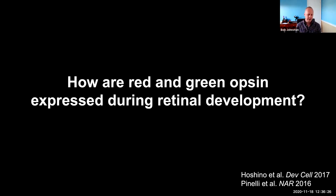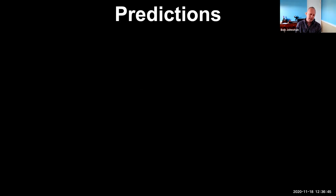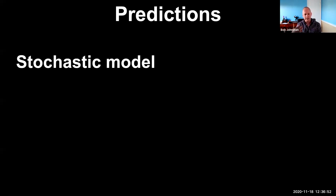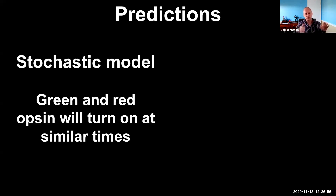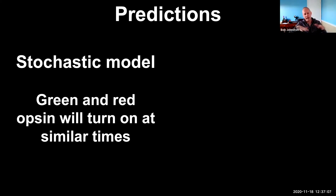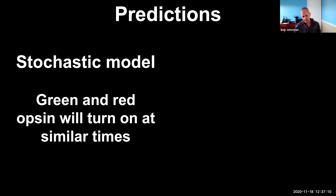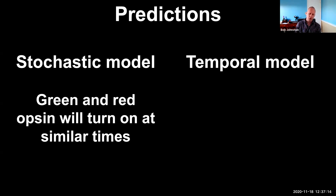Other data from other groups, though more sparse, suggested a different model: blue cones come first, followed by green cones, then red cones. When we entered this game, Sarah ultimately came back to one big question: how are red and green opsin expressed during retinal development? We were fortunate that datasets published by Hoshina et al. and Pennelli et al. came out, studying bulk RNA-seq expression. The challenge is that these genes are highly similar. Based on the two models, we had two predictions: if stochastic, green and red opsin should turn on at about the same time; if temporal mechanisms play a bigger role, perhaps one opsin would be expressed before the other.